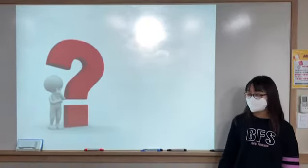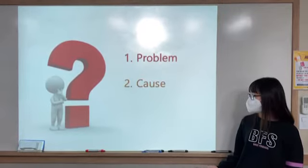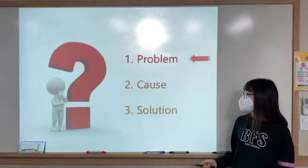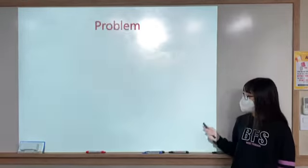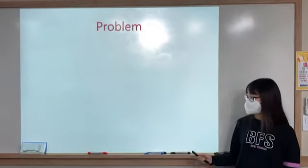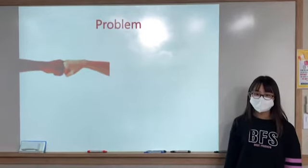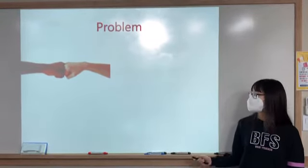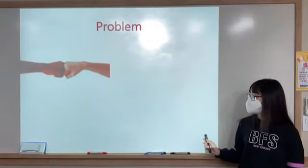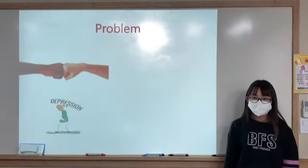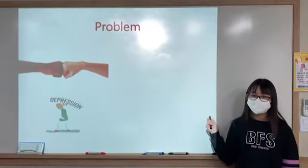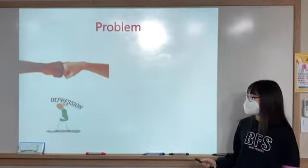Today I will talk about the problem, the cause, and the solution of racism. First, I will talk about the problem. If racism happens, there can be a fight between the races. And then the person who gets discriminated might end up getting depression. And being discriminated toward another race can lead to school bullying.